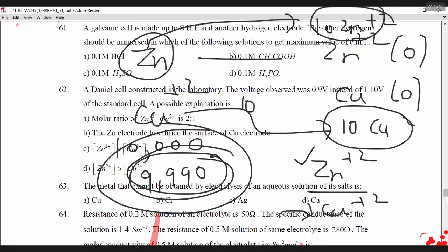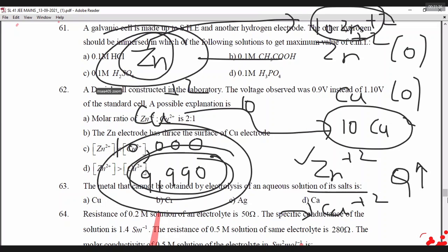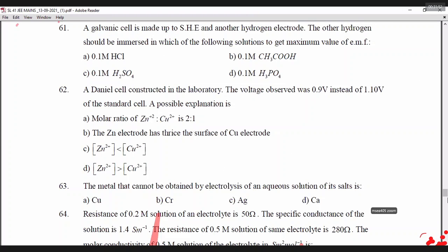As Q increases, cell potential decreases — that is the rule. After some time, there is no more zinc metal, only zinc ions. Cell reaction stops. We say the cell is dead. Always: as Q increases, cell potential decreases.